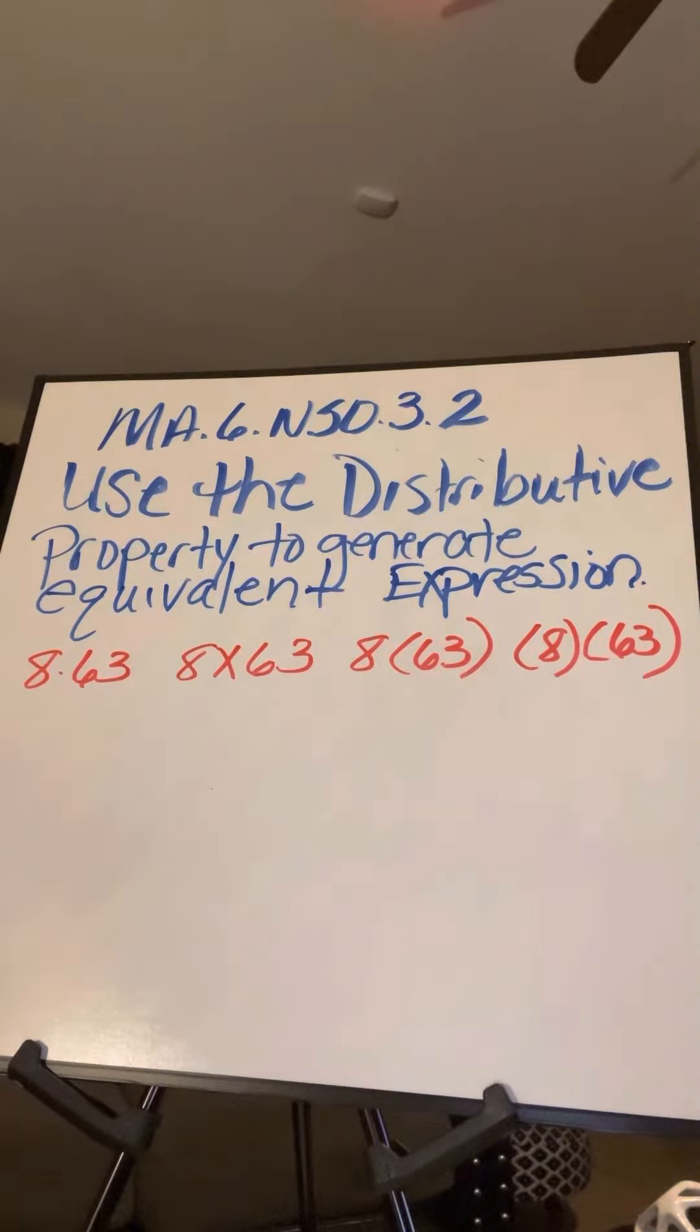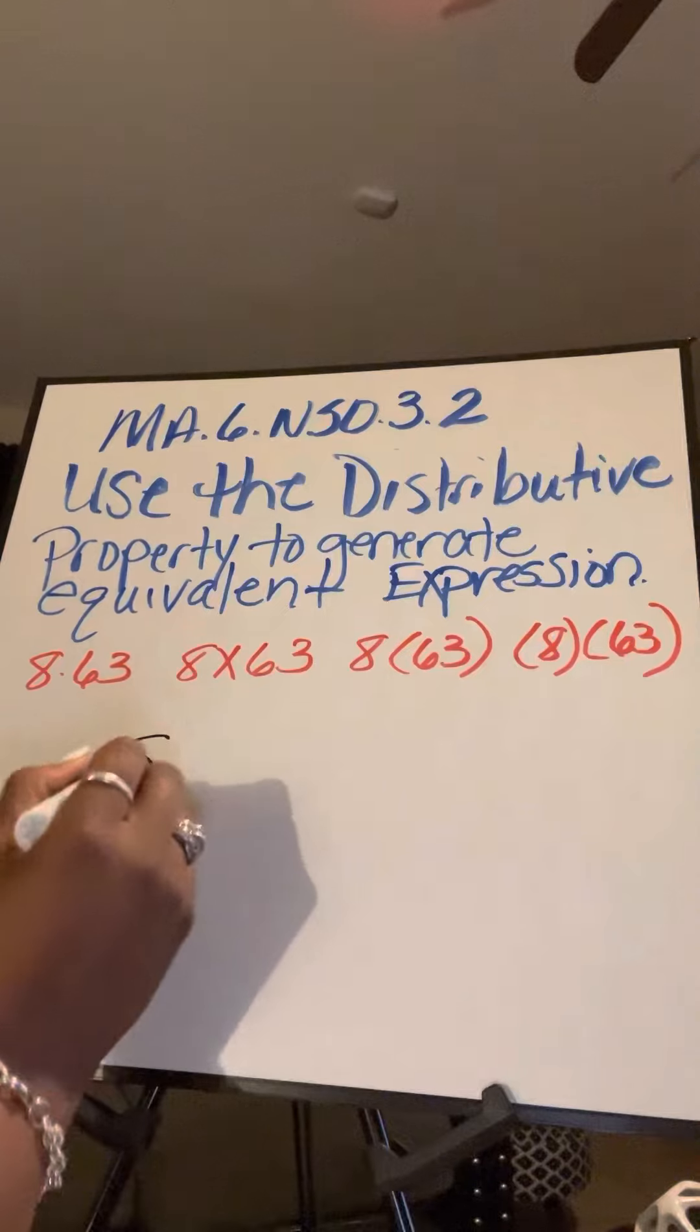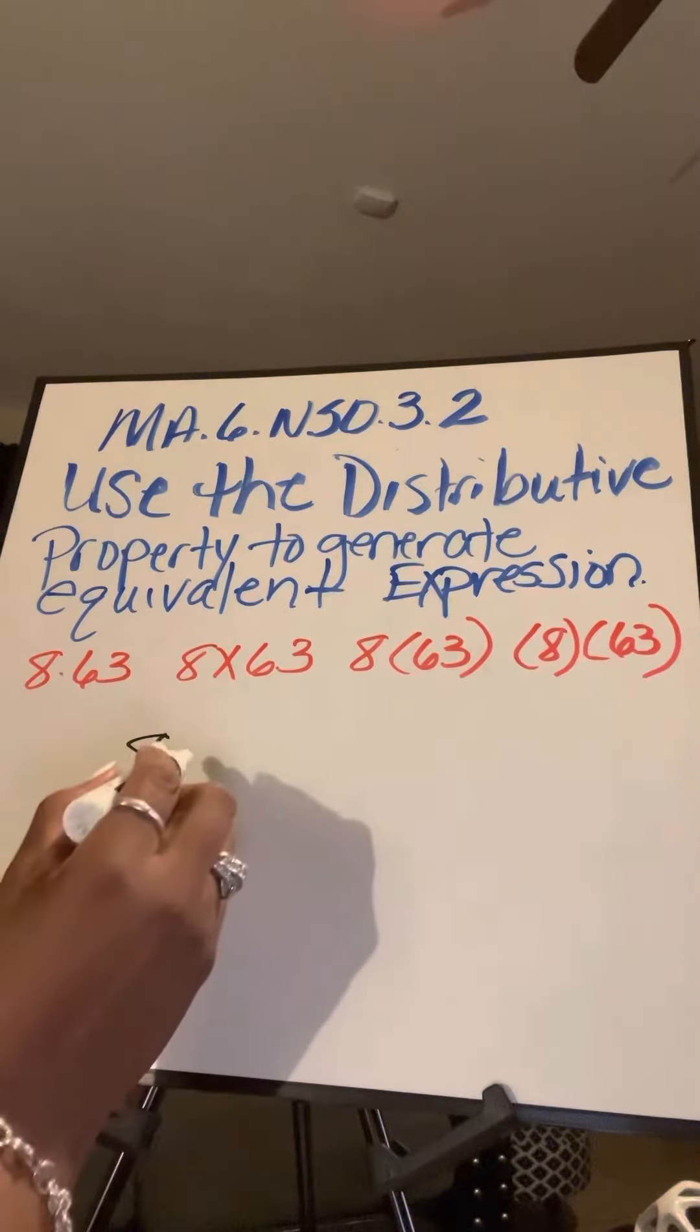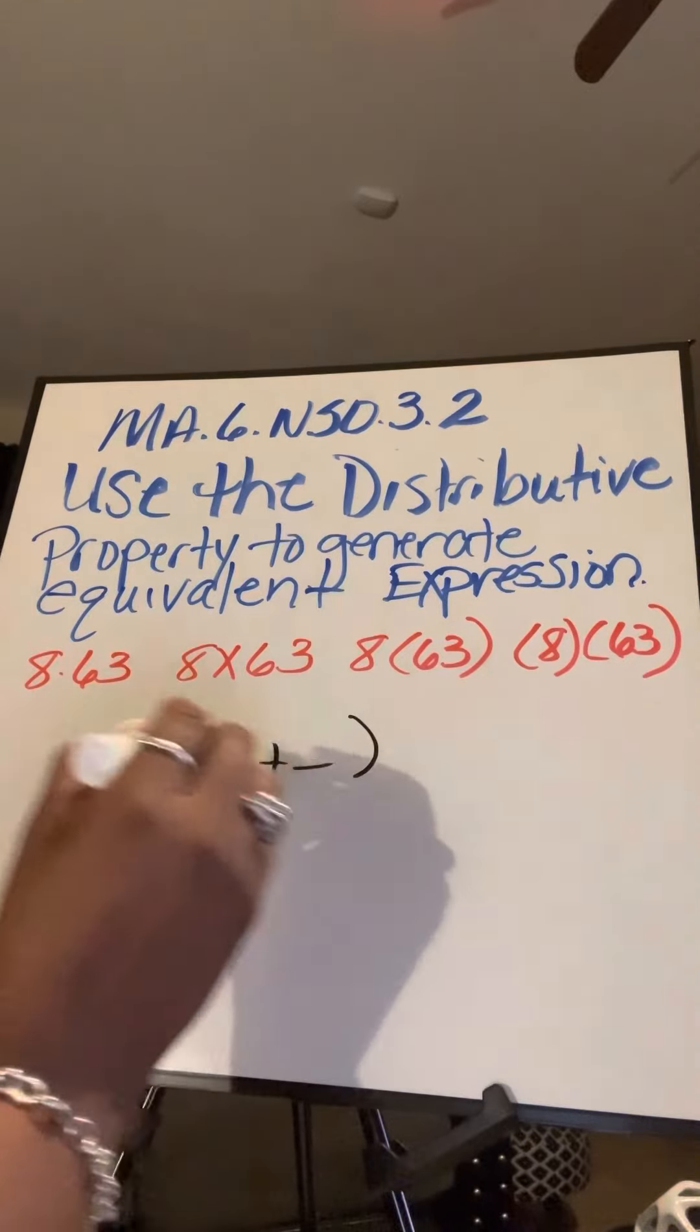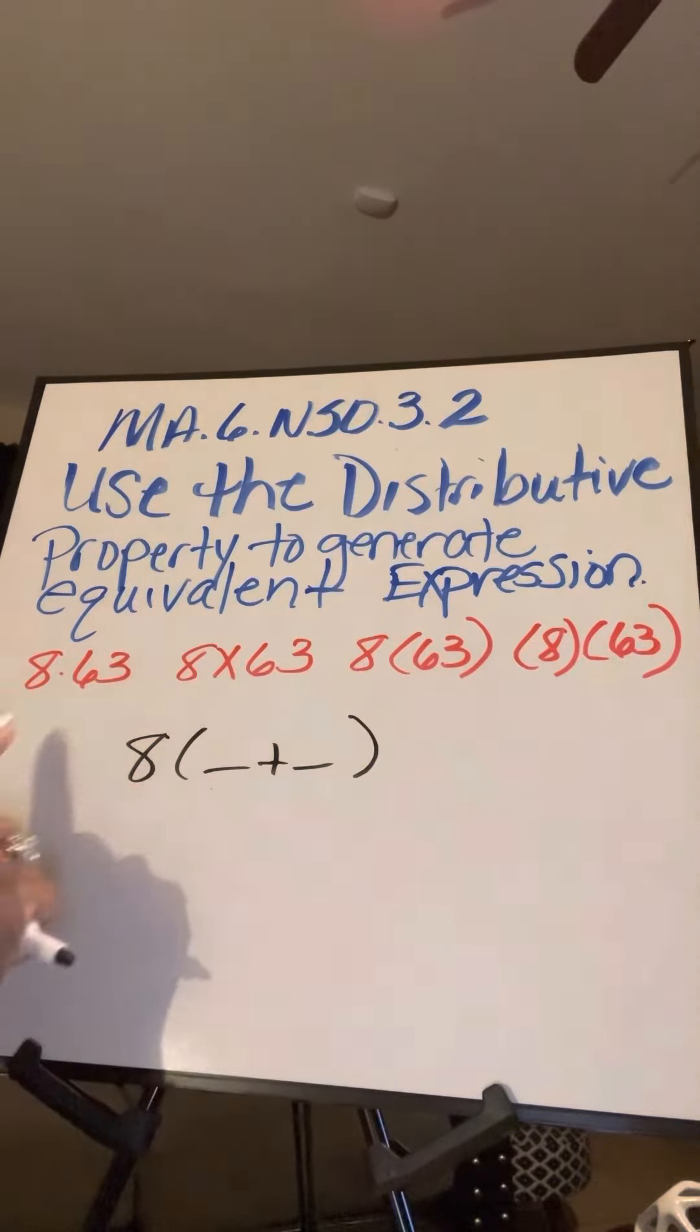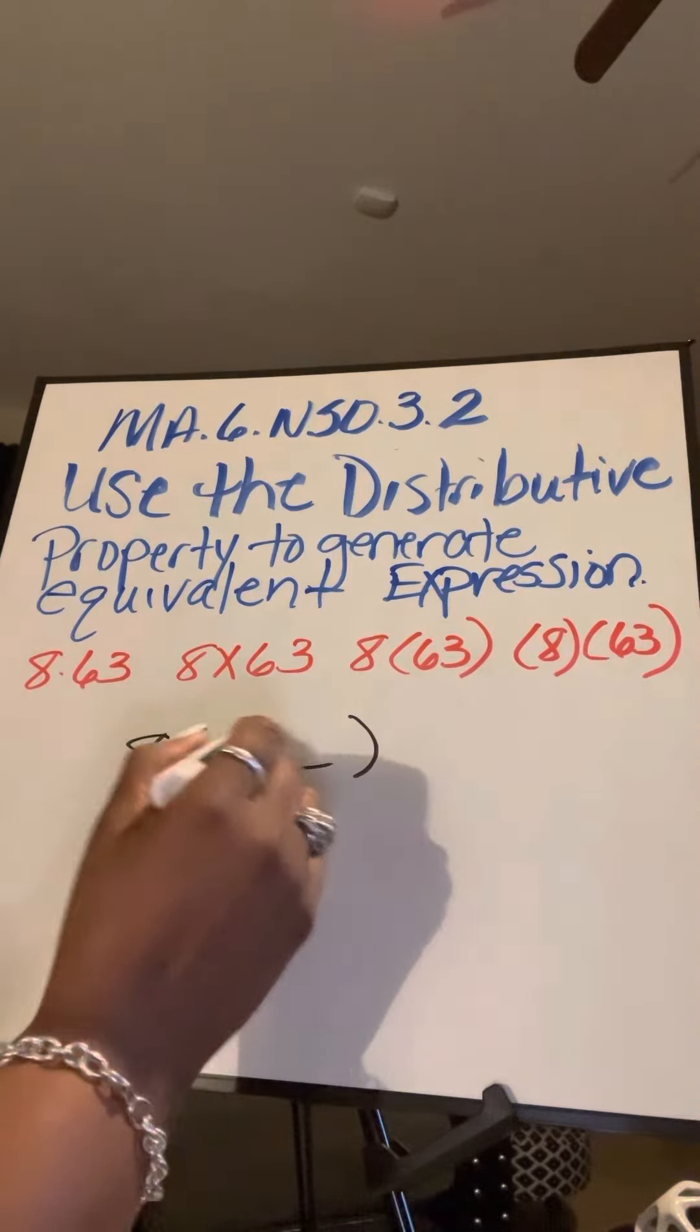As I taught you, when you're using the distributive property for multiplication, we use what we call KBA. That means we keep the single digit and we break apart the second digit. So I'm going to keep the single digit, which is the eight, and then I'm going to break apart the second digit by place value. So this is 63, so I have 60 plus three.